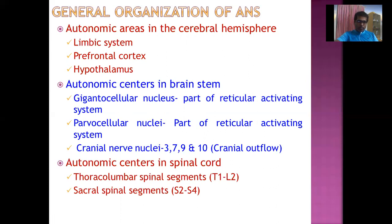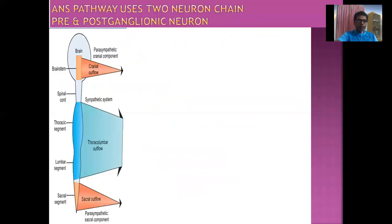The autonomic centers of the spinal cord consist of the Thoracolumbar spinal segment (Thoracic 1 to Lumbar 2) and the Sacral spinal segment (Sacral 2 to Sacral 4). The Cranial Outflow — Cranial Nerves 3, 7, 9, and 10 — along with the Sacral Outflow originating from Sacral 2, 3, and 4 segments, together form the Craniosacral Outflow, which is functionally related to Parasympathetic function. That is why Craniosacral Outflow is also known as the Parasympathetic Nervous System.